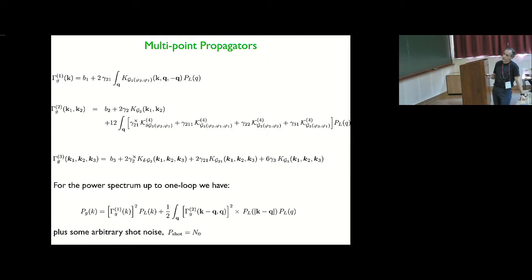So what do these guys look like? You can easily write the expressions for them from those diagrams, and they are relatively simple. So all the tree-level corrections, so for gamma 1, it's just linear bias plus a one-loop term. Gamma 2 is just the two terms at tree order, B2 and the tidal tensor bias, and then you have the one-loop corrections. And for gamma 3, we only need tree levels, so we don't need to write the one-loop corrections.